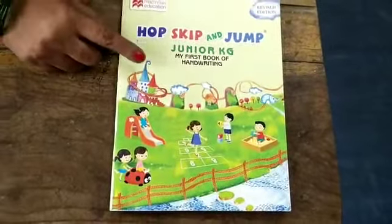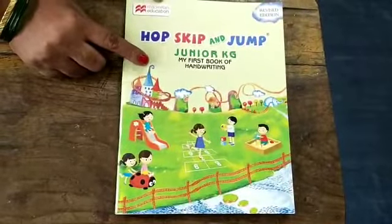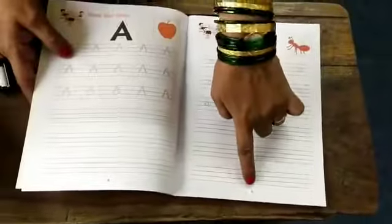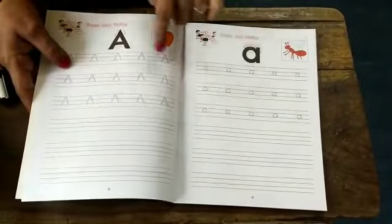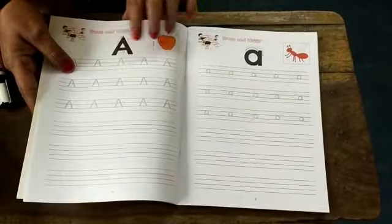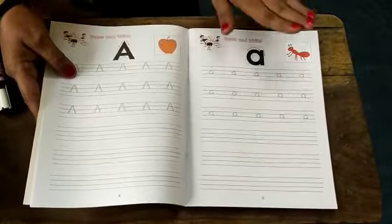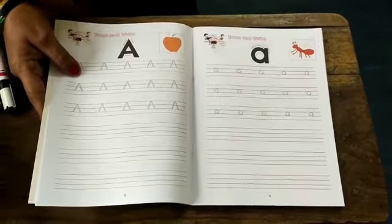You have to do writing work in this handwriting book. See here page number 9, small a. We have completed capital A before, so you will do small a. We'll be right back.